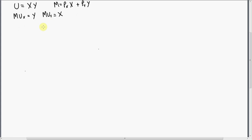To derive the compensated demand functions, we're going to start with the utility maximizing condition, where the marginal utility of good X divided by the price of good X must equal the marginal utility of good Y divided by the price of good Y. So I'm going to go ahead and substitute the marginal utility of good X and marginal utility of good Y into this expression.